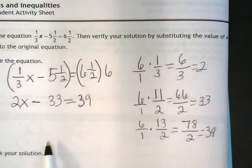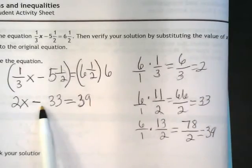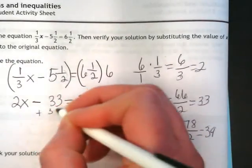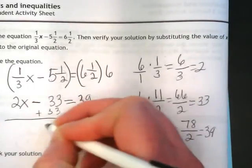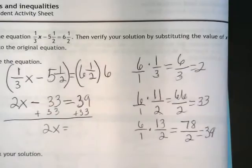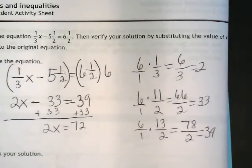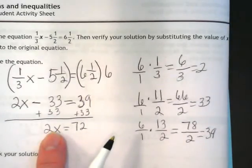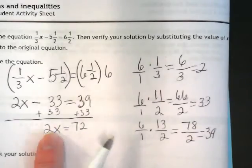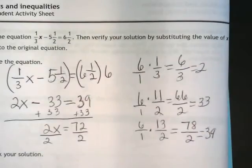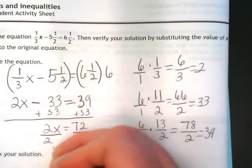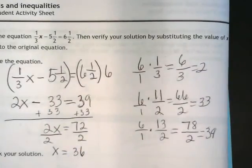And do we know what to do with these numbers now? If we see subtraction, what do we do? We add. Let's add 33. We're going to get 2x is equal to 39 plus 33 is 72. Opposite away, we're going to do the opposite. I have 2x, that's multiplication, so we're going to divide by 2. What's 72 divided by 2? You guys all have a calculator. Thirty-six. x equals 36.